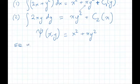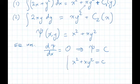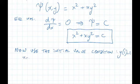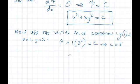And the equation was d psi dx equals zero. Psi is equal to some constant c. X squared plus x y squared is equal to some constant c, and that's the general form of the solution. Now we use the initial value condition. It says y of one is equal to two. X equals one, y equals two. Plug it in. I get one squared plus one times two squared equals c. C equals five. So the particular solution is x squared plus x y squared equals five.